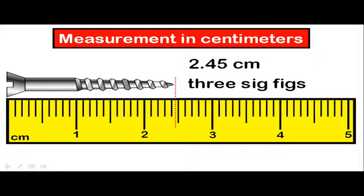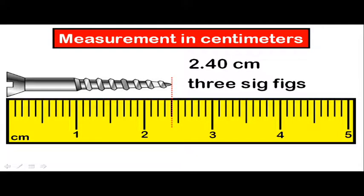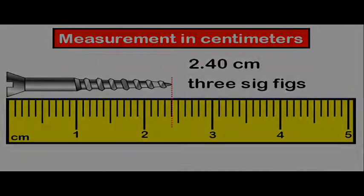Now, let's take a look at what would happen if the length of the object falls exactly on the line. Should we call this measurement 2.4 centimeters? No, in this case, we must still add an estimated digit out to the hundredth place, but if it falls exactly on the line, we simply add a zero. So the number 2.40 centimeters is more precise than merely 2.4. This measurement has three sig figs.